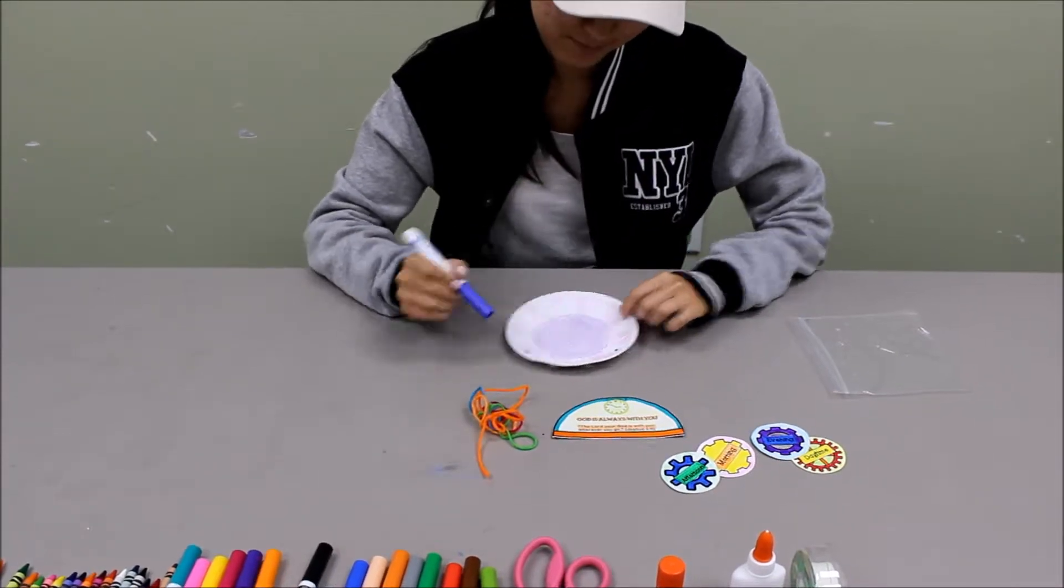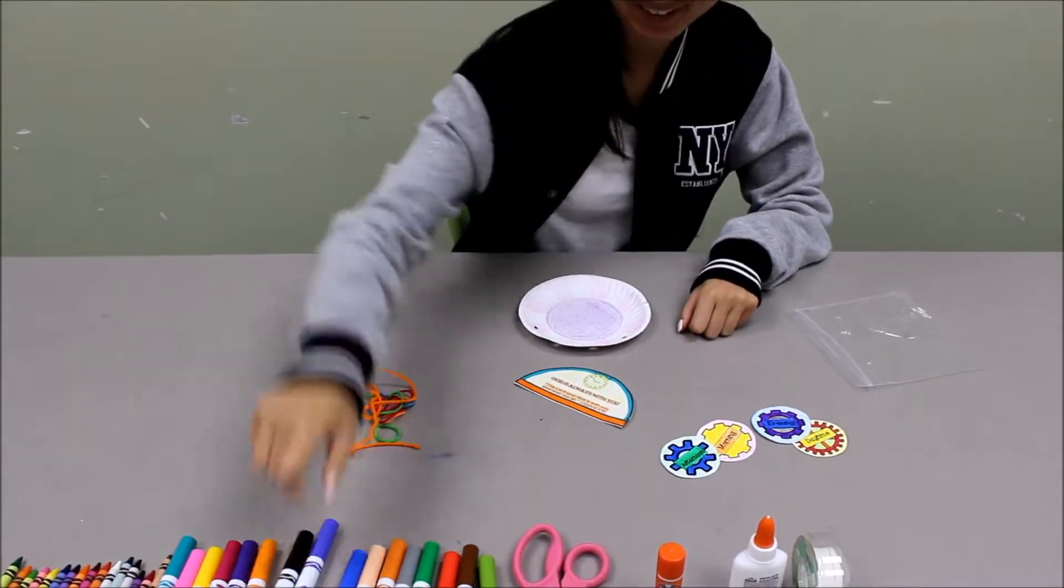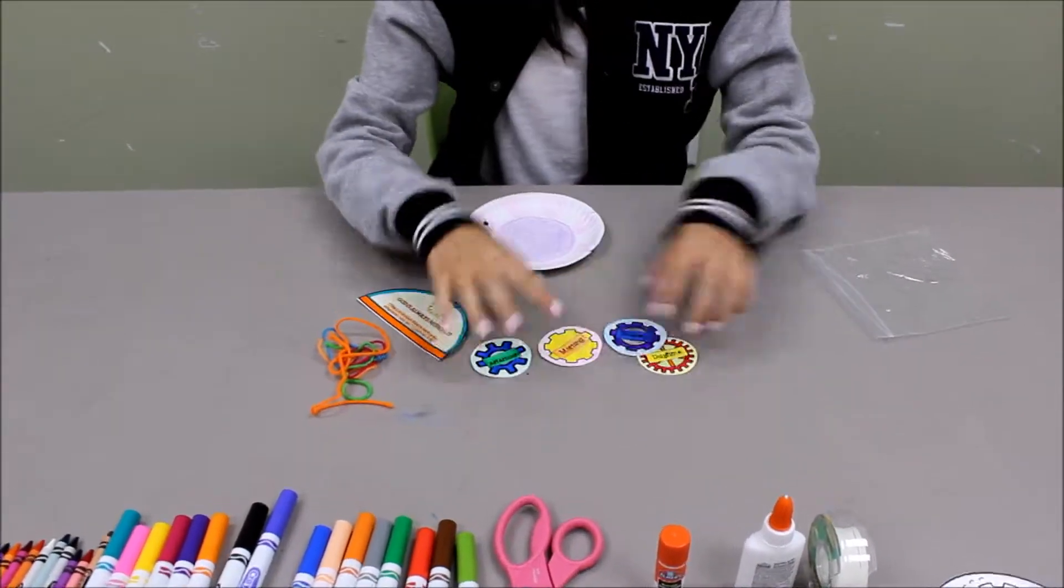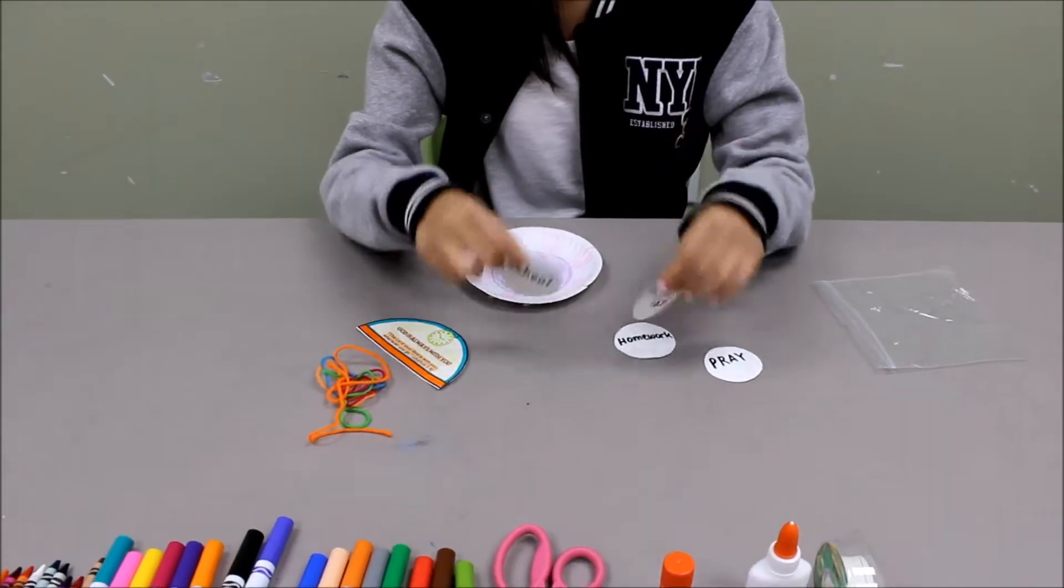So first students will decorate the plate and color in the title template and all the gears. Next students will take the gears and write on the back or draw on the back of things they should do during that time of the day.